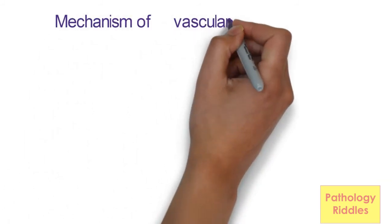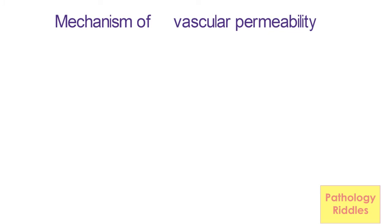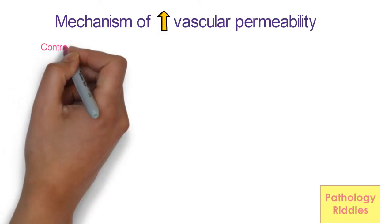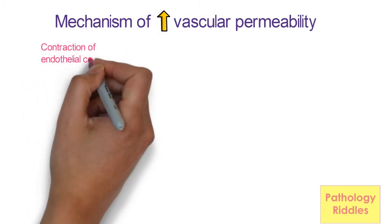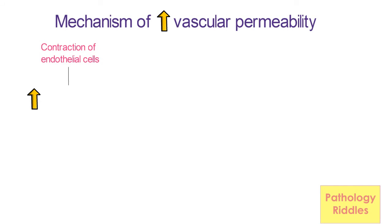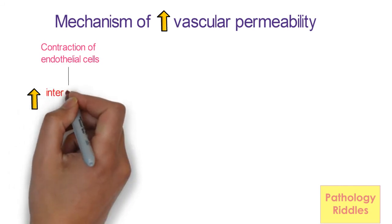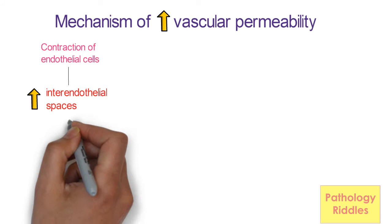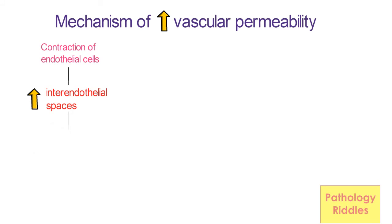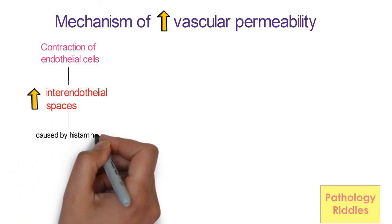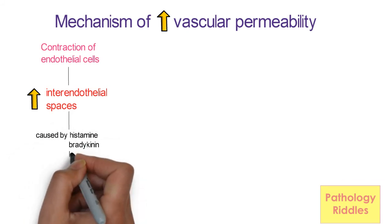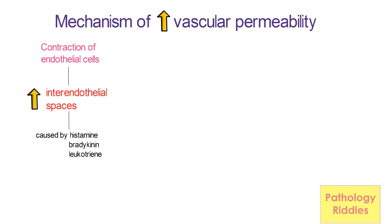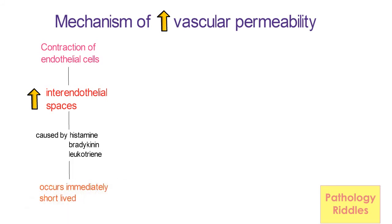Vascular permeability occurs because of three mechanisms. The first is contraction of endothelial cells — the innermost layer of the arteriole — which leads to increased inter-endothelial spaces. It is caused by histamine, leukotrienes and bradykinin. It occurs immediately and is short-lived.